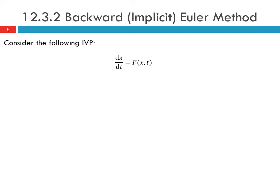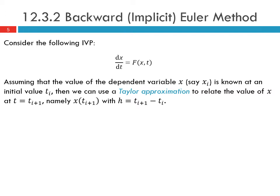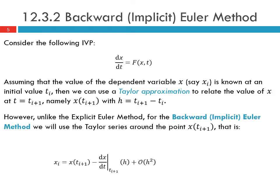Consider the initial value problem shown here: dx/dt is equal to some function of x and t. If we assume that the value of the dependent variable x, so xi, is known at an initial value ti, then we can use a Taylor approximation to relate the value of x at ti+1, where the step size is ti+1 minus ti. Unlike the explicit Euler method, for the backward or implicit Euler method we will use the Taylor series around the point x at ti+1. So xi is equal to x at ti+1 plus dx/dt evaluated at ti+1 times h, plus error terms of order h squared.